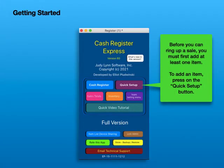Before you can ring up a sale, you must first add at least one item. To add an item, press on the Quick Setup button.